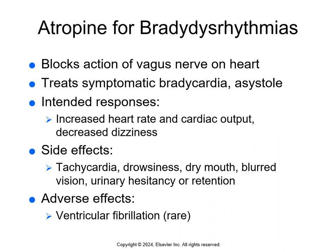Atropine is used for brady dysrhythmias — "brady" meaning too slow. The vagus nerve slows the heart rate, so atropine blocks the action of the vagus nerve on the heart. It treats symptomatic bradycardia — a heart rate less than 60 with other symptoms — and asystole, which is the absence of electrical activity in the heart. The intended response is to increase heart rate and cardiac output and decrease dizziness. In an emergency setting, atropine may also be given through an endotracheal tube or intraosseous route.